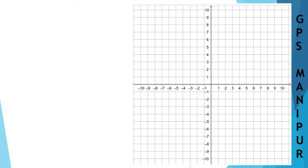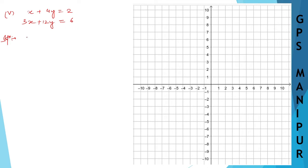We are taking Exercise 4.1, Question 3, Roman numeral 5. The question is: x + 4y = 2 and 3x + 12y = 6. For the solution, take the first equation x + 4y = 2, so x will be equal to 2 minus 4y. This is equation number one.